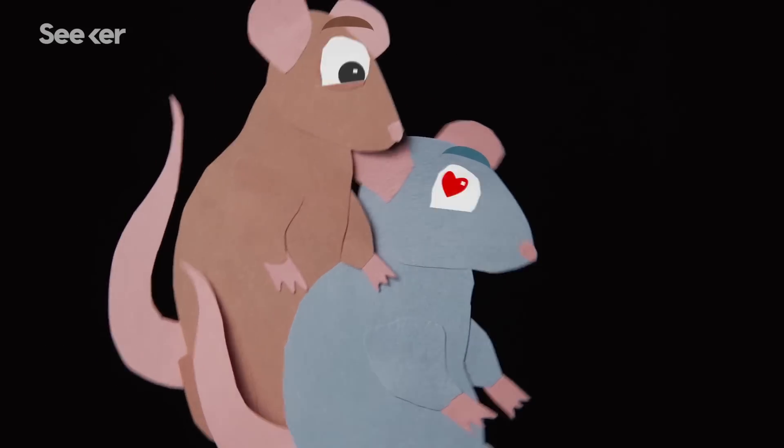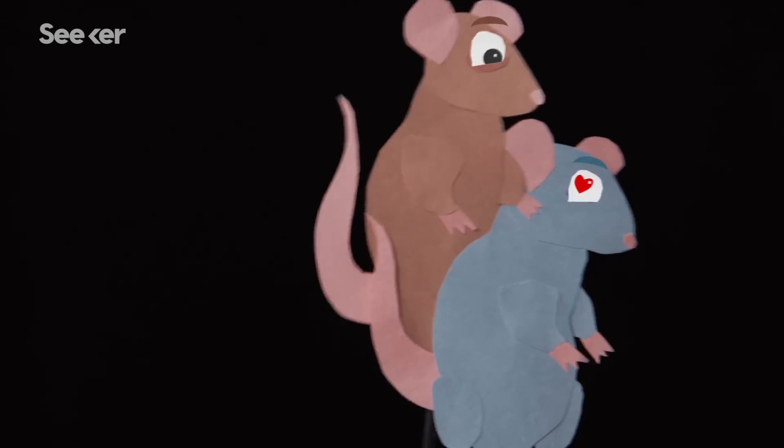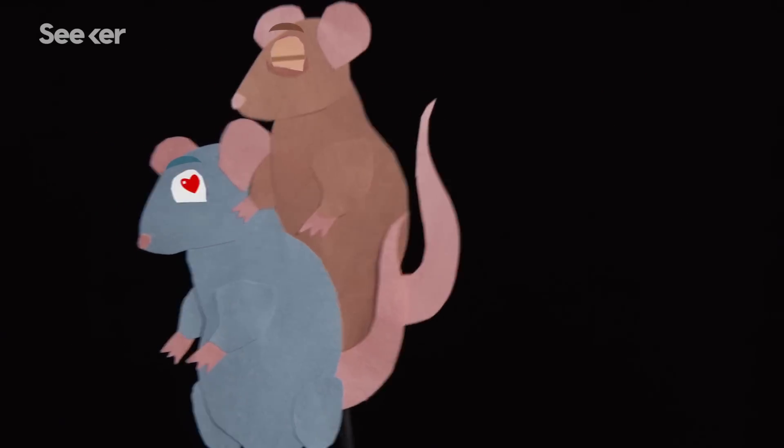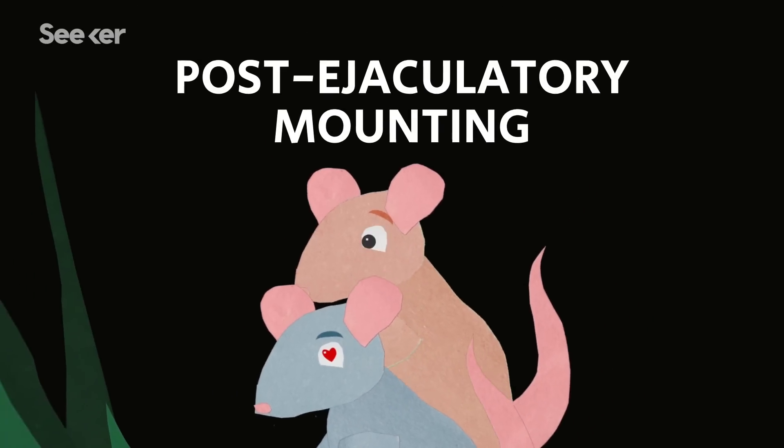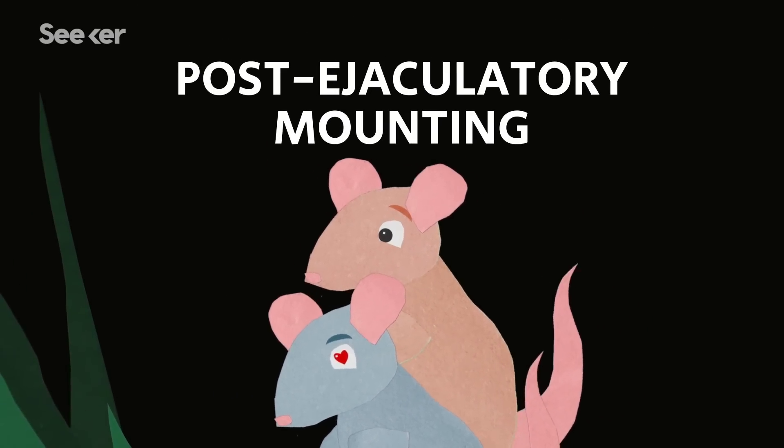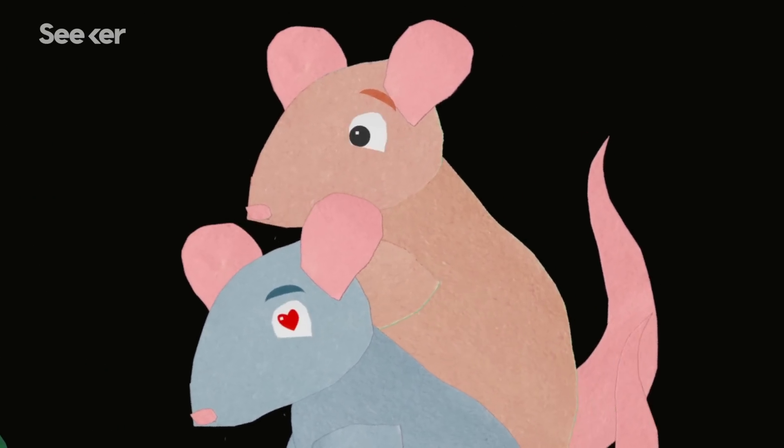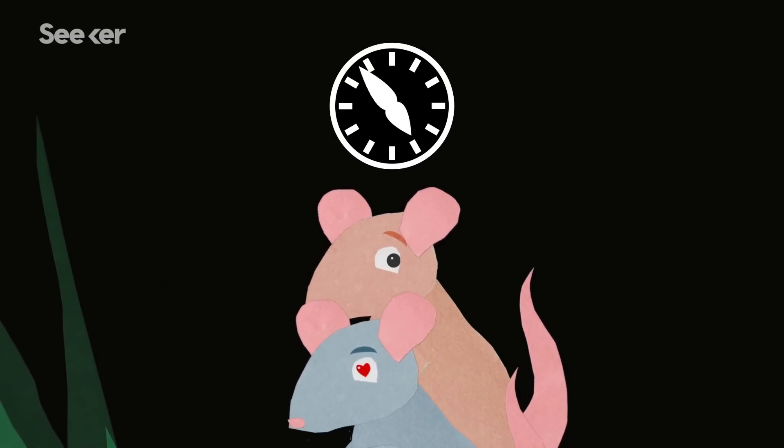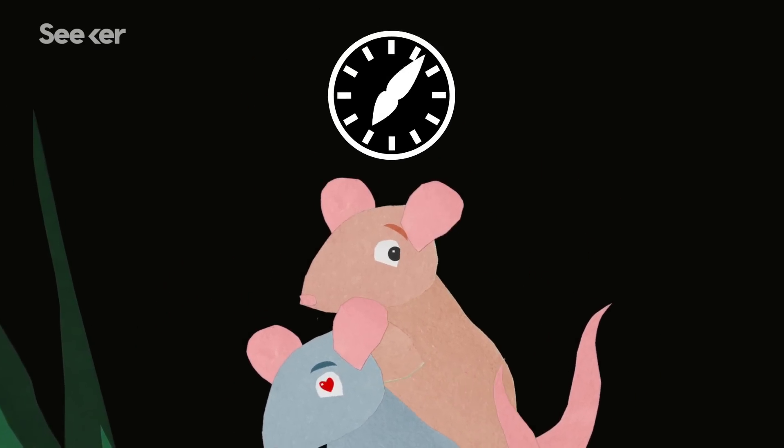A female that is happy with her sexual partner may actually be on board with having her vagina sealed up. Indeed, females sometimes solicit something called post-ejaculatory mounting from their male partners, which involves mounting, not sex, and gives the plug more time to harden while protecting it from being displaced by another male.